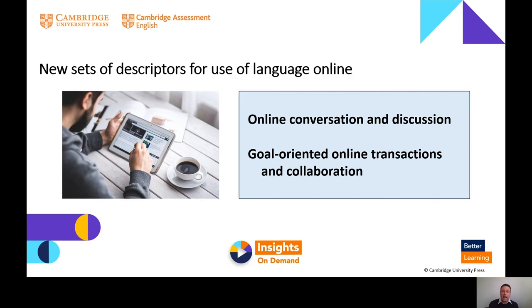The next change I want to highlight is the use of language online. Twenty years ago this wasn't so much of an issue, but now a lot of language is communicated online. There are two new scales in the CEFR: online conversation and discussion, and goal-oriented online transaction and collaboration. Both have descriptors at each level that you can use and refer to.